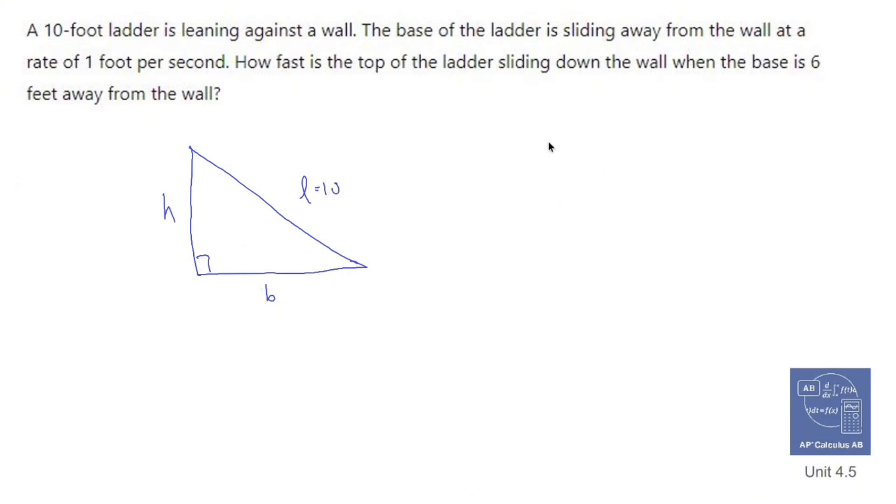What I have here is Pythagorean theorem. Okay, so I'm going to write out H squared plus B squared equals 10 squared, also known as 100.